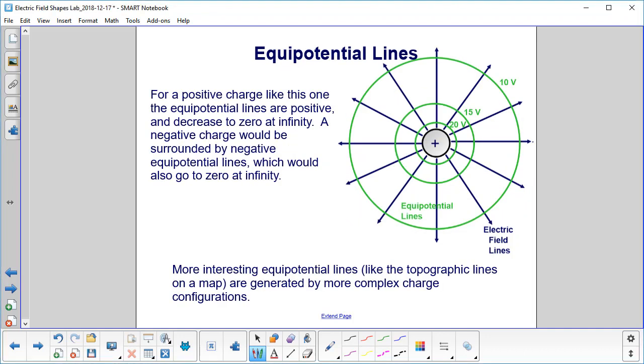For a positive charge like this example, the equipotential lines are positive, 20, 15, 10, and they decrease to zero at infinity. We said that earlier, that voltage at infinity is zero.